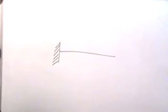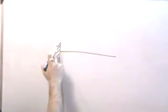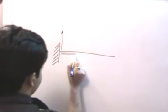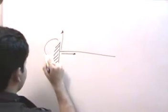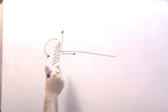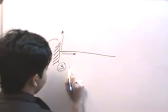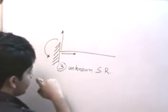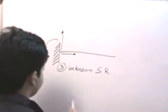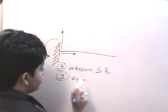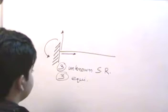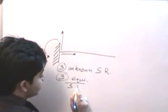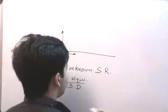At the fixed end of the cantilever beam, there are three restraints: a support reaction in the vertical direction, a support reaction in the horizontal direction, and a restraining moment. So there are three unknown support reactions. Since a 2D rigid body has three equations of equilibrium, these three unknown support reactions can be found using those equations, and we say this structure is statically determinate.